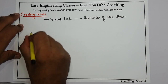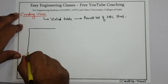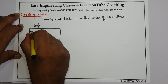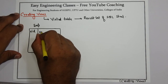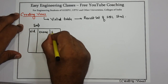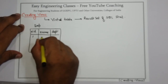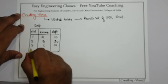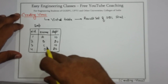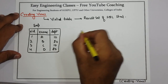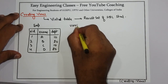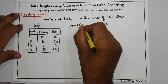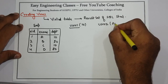For example, suppose I have a table like this. I have a table employee with employee ID, employee name, and department. This is a table and I have two different users, user1 and user2. Suppose user1 handles department 10 and user2 handles department 20.